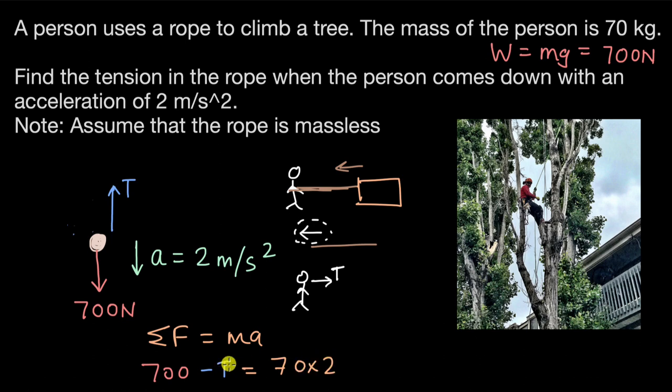So this becomes 140. When we take T to the right hand side, this will be T equals 700 minus 140. And when you work this out, T comes out to be equal to 560 newtons. So this is 560 newtons.